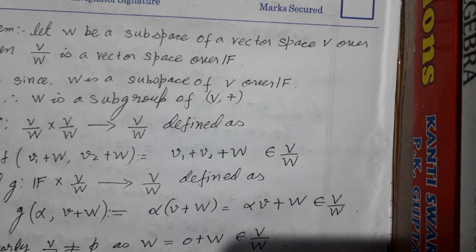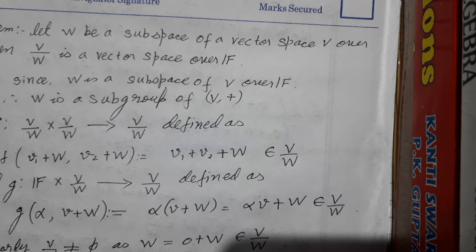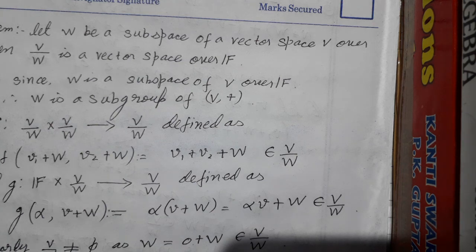In this video, I'm going to explain this theorem. First of all, W should be a subspace of a vector space over the field F. Then we try to define the quotient space.